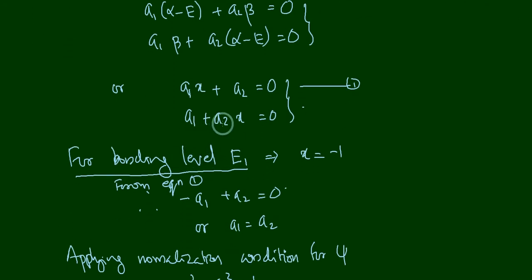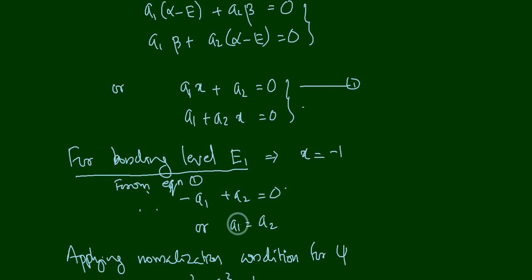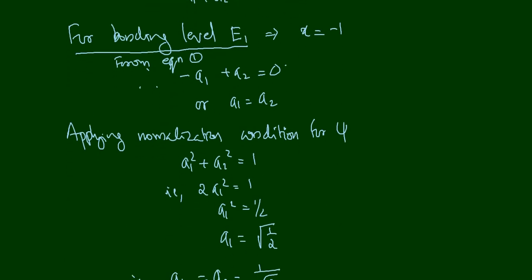For the bonding level e1, we know x = −1. Substituting into equation 1 (a1·x + a2 = 0) gives −a1 + a2 = 0, which means a1 = a2. These are the relative values of a1 and a2.